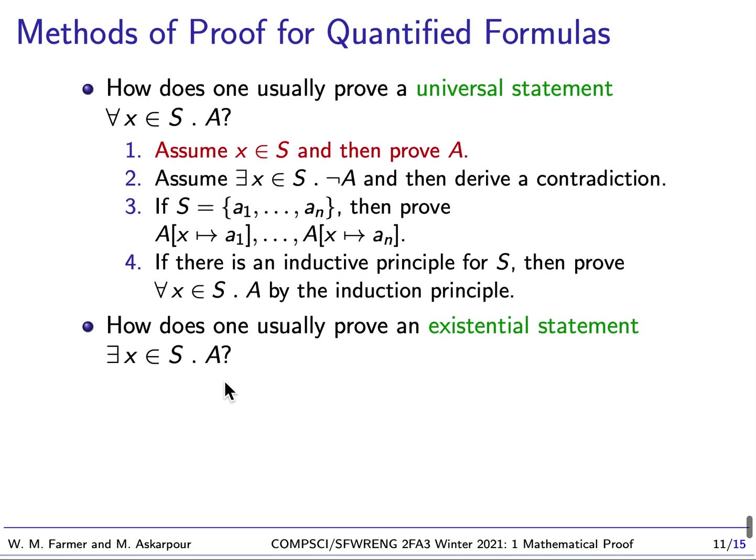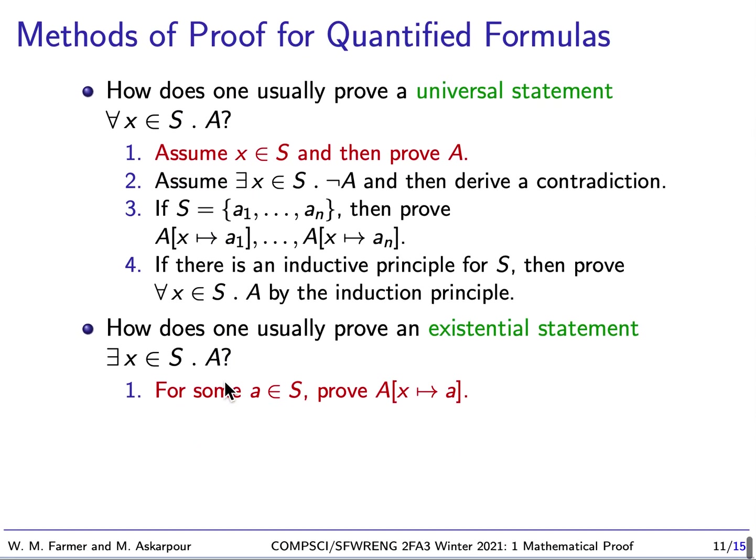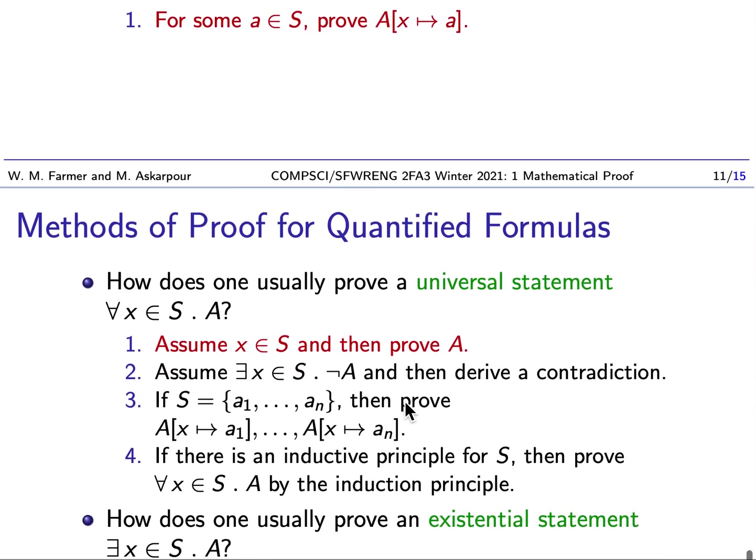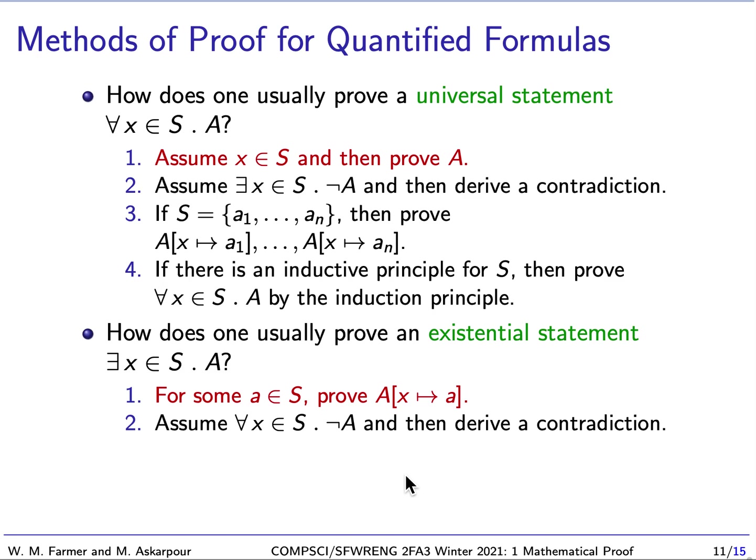Okay, so how does one prove an existential statement? Well, the standard way is you find some member of S. Remember an existential statement like this. There exists x in S such that A is true. You just find some member a in S that when we instantiate A, capital A with this little a, we get a statement that we can prove. So in other words, we've found an element in S and we show that A for that element is true. Another approach is just to assume that what we're trying to prove is false and then derive a contradiction. So the statement there exists x in S such that A holds, the negation of that is that for all x in S, A does not hold.